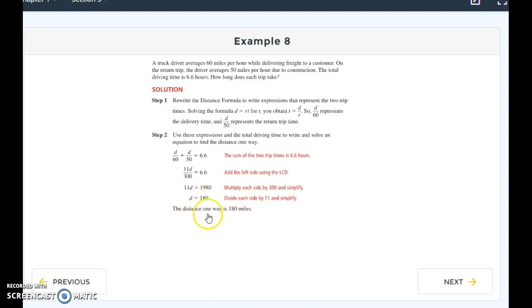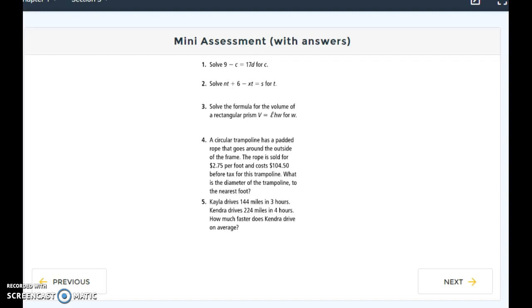So the distance, right, D was distance, one way is 180 miles. So then I can use my expressions from step one to find my two times. Because I was asked, how long does each trip take? So the delivery is 180 miles at 60 miles an hour, which tells me it's three hours. Then the return trip is 180 miles at 50 miles per hour, which gives me 3.6 hours.